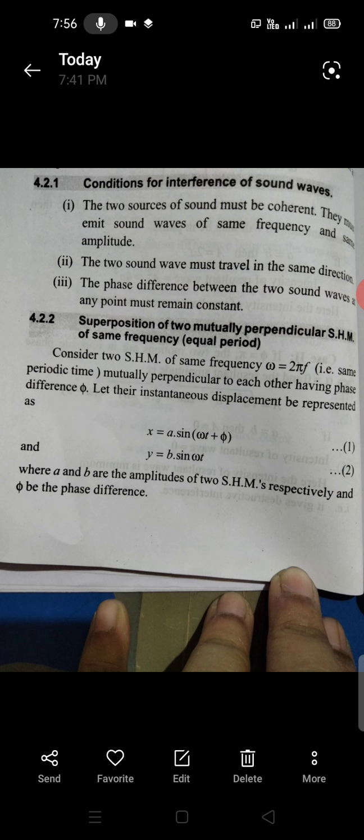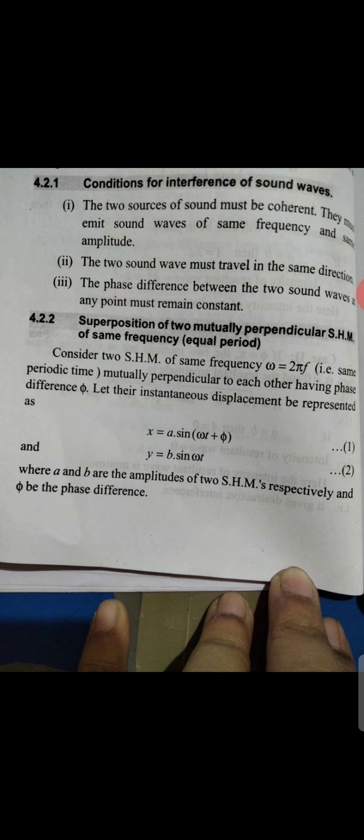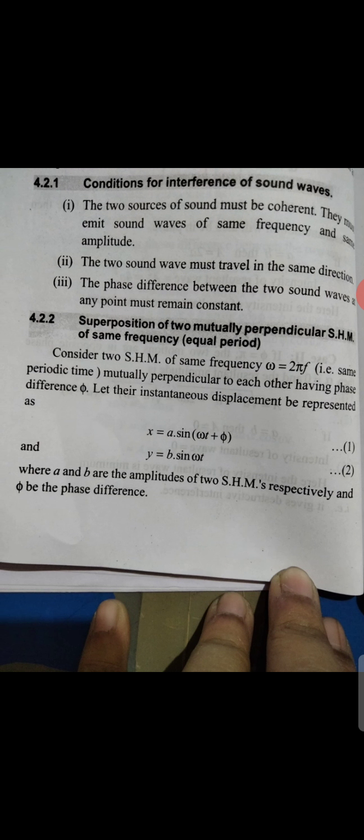Let their instantaneous displacements be represented as: x equals a sin(omega t + phi) — equation 1, and y equals b sin(omega t) — equation 2, where a and b are the amplitudes of the two SHMs respectively, and phi is the phase difference.